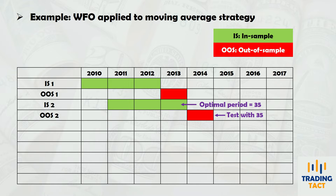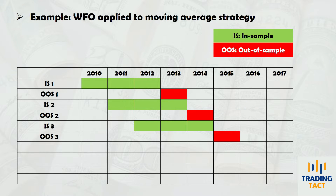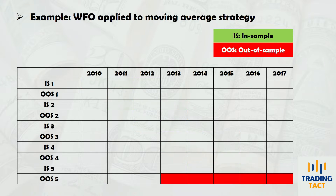Next, you move your optimization window forward by one year and find that the optimal period is now 35. You then test your 35-period moving average over the 2014 data. This cycle of in-sample optimizing and out-of-sample testing is repeated as you progress through your entire dataset. If you stitch all your out-of-sample segments together, you get a complete out-of-sample backtest.